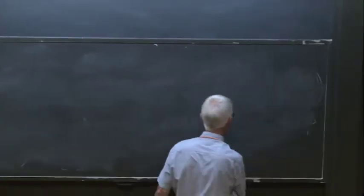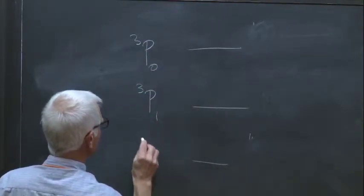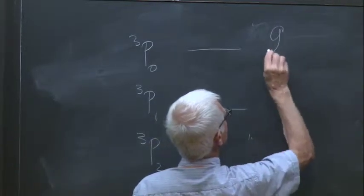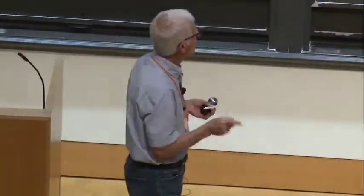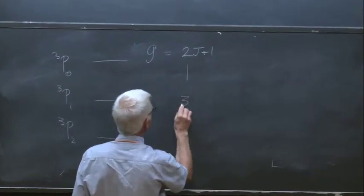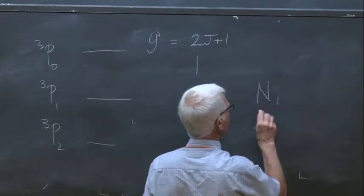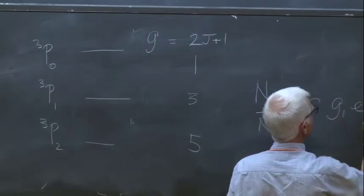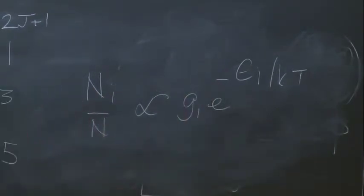A key issue is the degeneracy of these levels. We have three levels — triplet P₀, triplet P₁, triplet P₂ — and the degeneracy G equals 2J+1. We have an angular momentum vector pointing in 2J+1 quantized directions, giving degeneracies of one, three, and five respectively. The populations N_i/N are proportional to the degeneracy times e to the minus E_i/kT, so populations depend not only on energy but also on degeneracy.